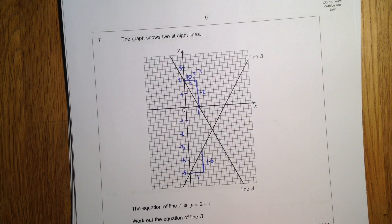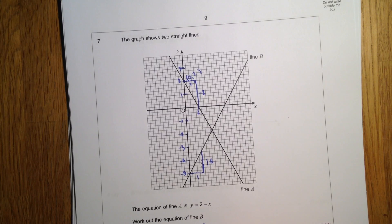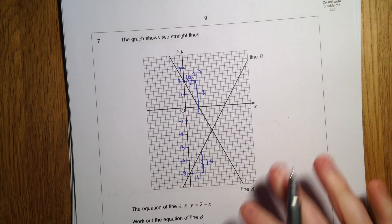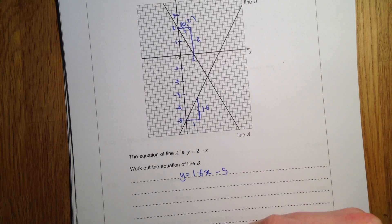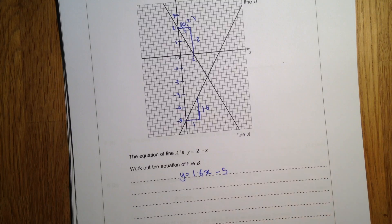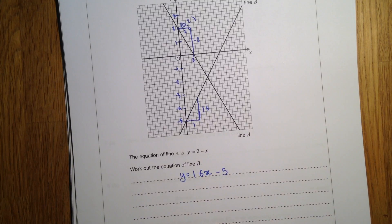It goes up 1, 2, 3, 4, 5, 6, 7, 8 squares. So 8 squares is going to be 1.6.